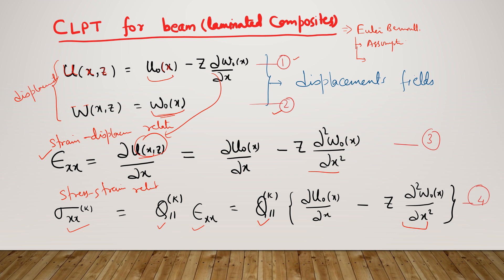For this beam, the in-plane displacement field is u(x,z) = u₀(x) − z · ∂w₀/∂x, where u₀(x) is the stretching part and the second term is the bending part. The transverse displacement is w(x,z) = w₀(x), showing that transverse stretching is not allowed, so w is not a function of z. Therefore, only epsilon_xx is available in the strain-displacement relations since there is no transverse shear strain; gamma_xz = 0 by assumption.